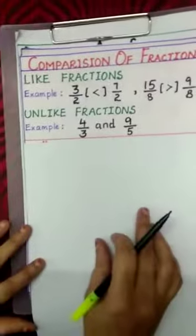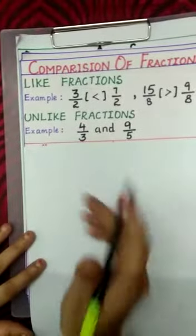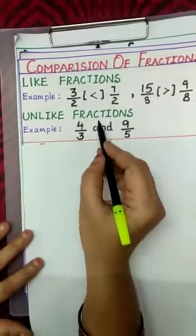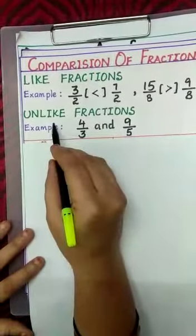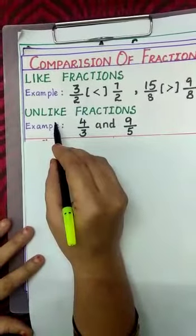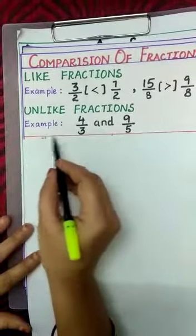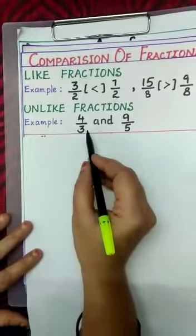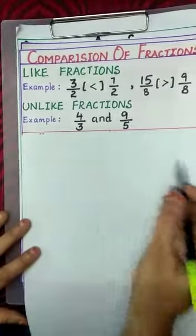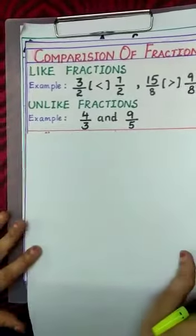Now next one: unlike fractions. Fractions having different denominators are called unlike fractions. For example, 4/3 and 9/5.